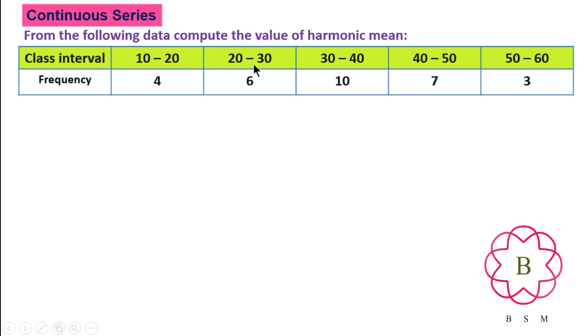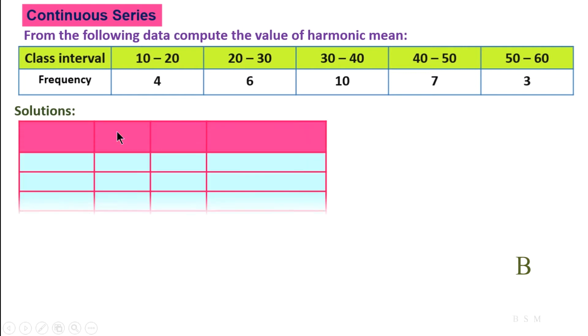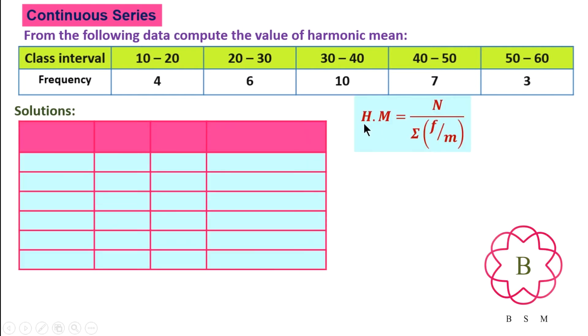The solution formula is N divided by sigma of F divided by M, where M is the midpoint of the class interval. So midpoint M, frequency F divided by M for each class interval value.